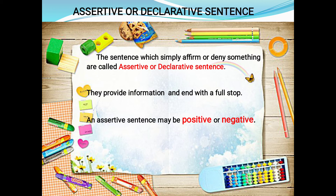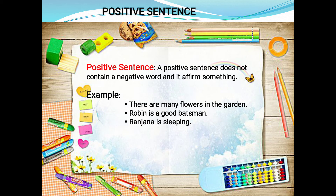An assertive sentence may be positive or negative. A positive sentence does not contain a negative word and it affirms something which is true. For example: 'There are many flowers in the garden,' 'Robin is a good batsman,' 'Ranjana is sleeping.' In these examples there is no negative word like not, no, or nor. So this type of sentence is a positive sentence.